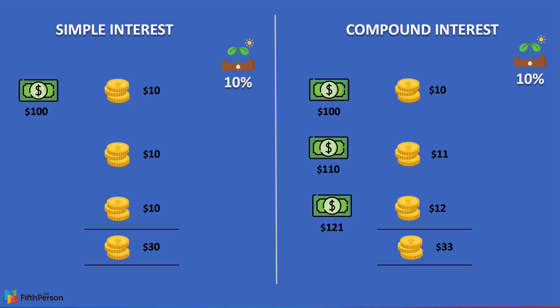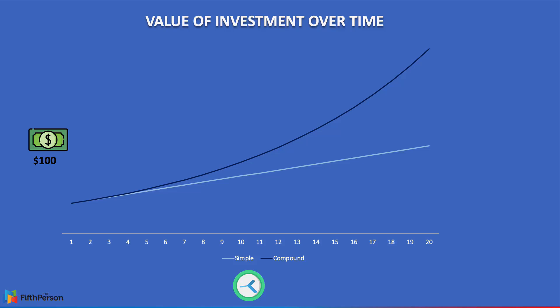At the end of the third year you get more than with simple interest — in this case $3 more. This might not seem like much in the short run, just a couple of years. But if you stretch that out over 20 years, you can see that simple interest yields $290, while compound interest yields double that — $612 — with the same starting capital but double the results. That's how powerful compound interest is.